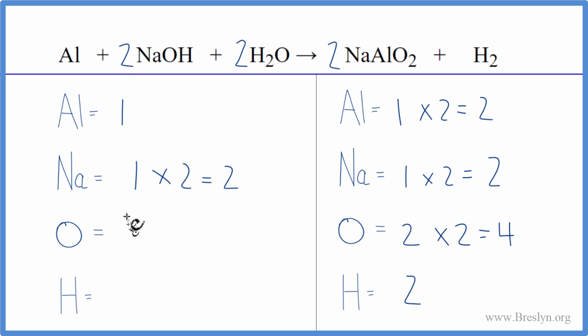So you can see now I have one times two plus one times two. That gives me four oxygen atoms. We've balanced those.